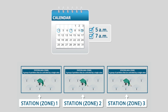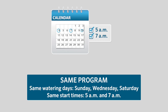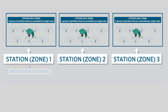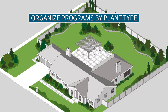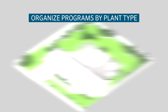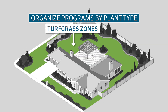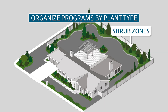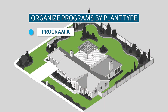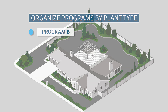If all stations will be watering on the same days and the same number of times a day, you can program all your stations in the same program. However, if some of your zones need to be watered more or less frequently than others, you must separate them into multiple programs. The ideal way to use programs is to organize them by plant types — for example, all turf grass zones might use Program A and all shrub zones might use Program B for less frequent watering.